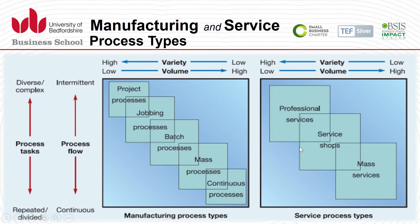For service organizations, high variety and low volume characterizes professional services — very customized and tailored. At the bottom right, high volume with very low variety represents mass services, where similar services can be repeatedly provided and even machines can perform the same service time and again with very few options of variety.